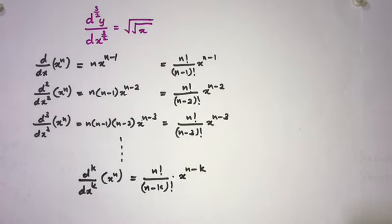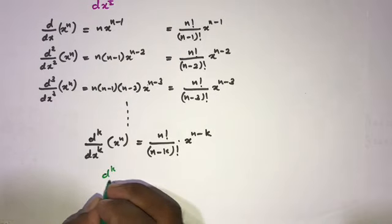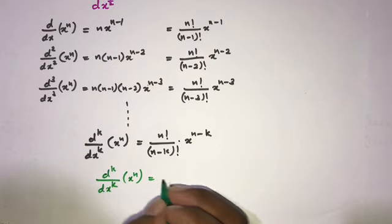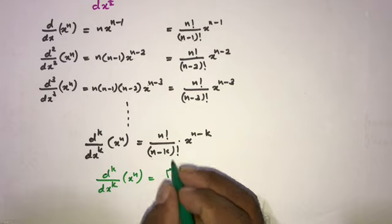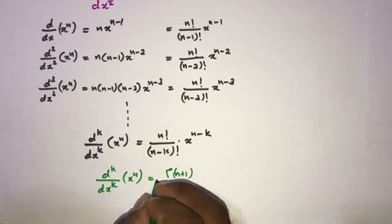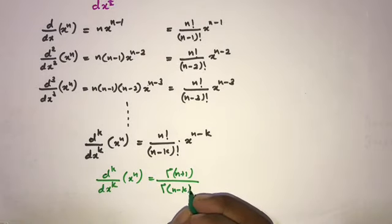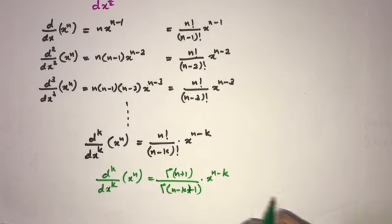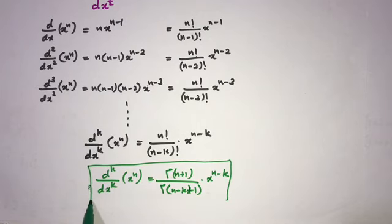Now we can express the factorial using the gamma function. So we write: d^k/dx^k (x^n) = Γ(n+1) / Γ(n-k+1) · x^(n-k). This is the general formula for fractional order differentiation of x^n.